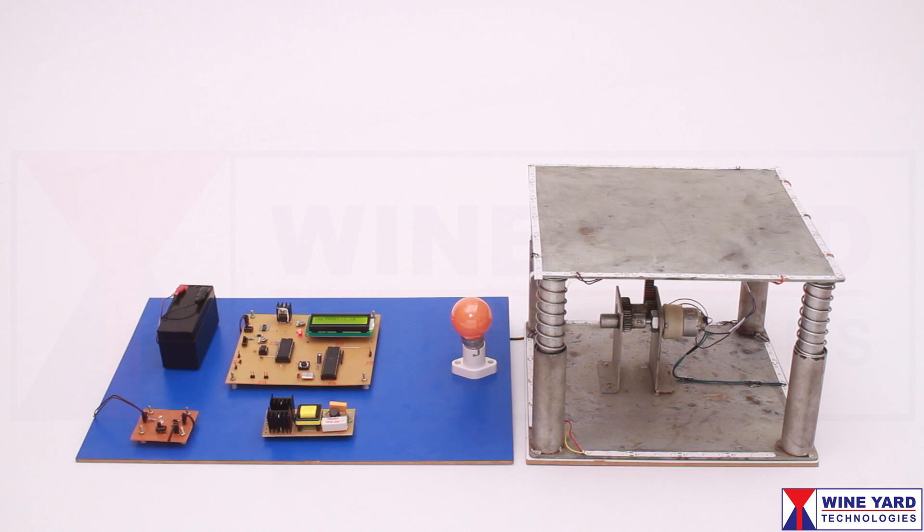Whenever a force is applied on this surface plate, this generator rotates in a clockwise direction and generates DC energy. Whenever the force is released, the generator rotates in a counterclockwise direction and generates DC energy in reverse polarity.